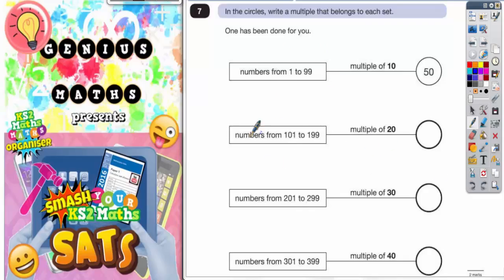So we could have 20, 40, 60, 80, 100, 120, 140, 160, 180, 200. So we could choose anything that's between 101 and 199, so we could have any of these numbers to go in here.